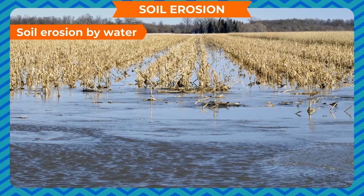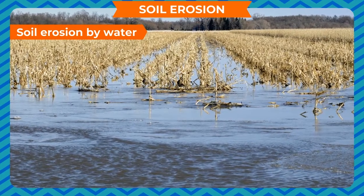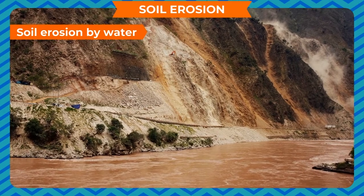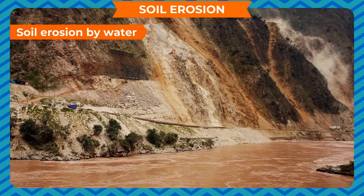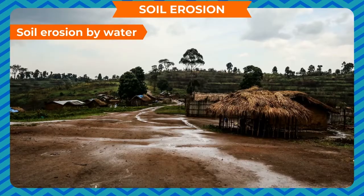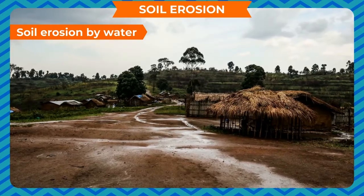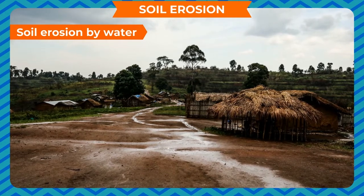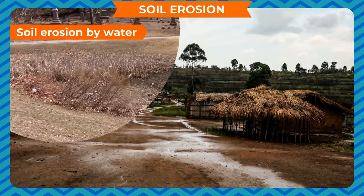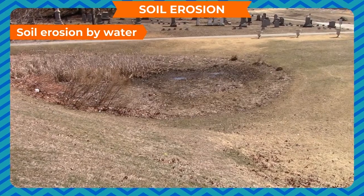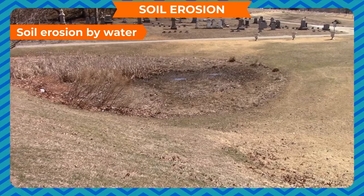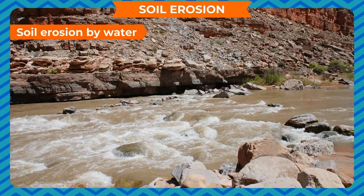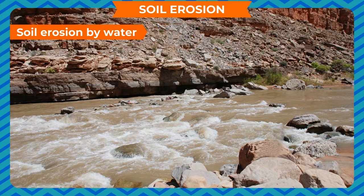Flooded rivers erode soil from their banks. When rivers flow down the hills, they carry a lot of soil with them. When the water flow slows down, part of that soil is deposited along the way reaching the plains. This process is called silting. Sometimes it changes the direction of flow of the river and causes flooding in the surrounding area, leading to heavy loss of life and property.